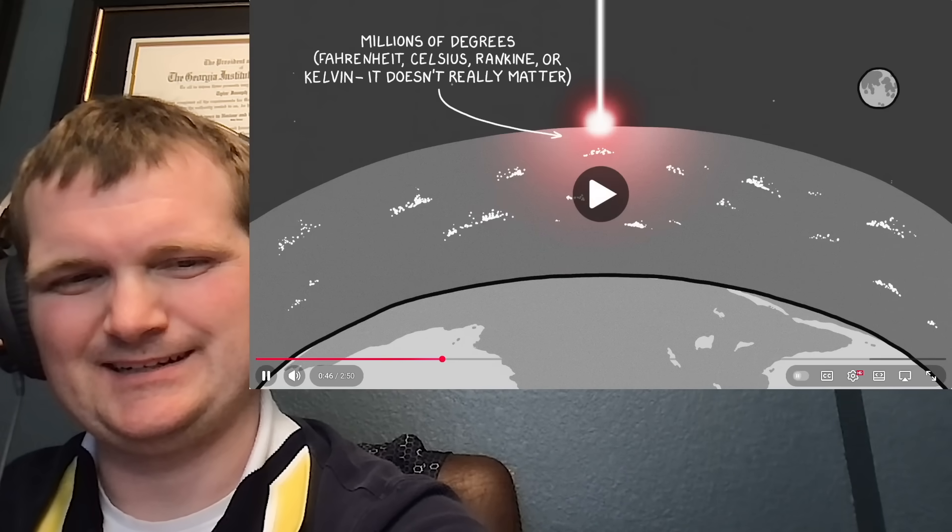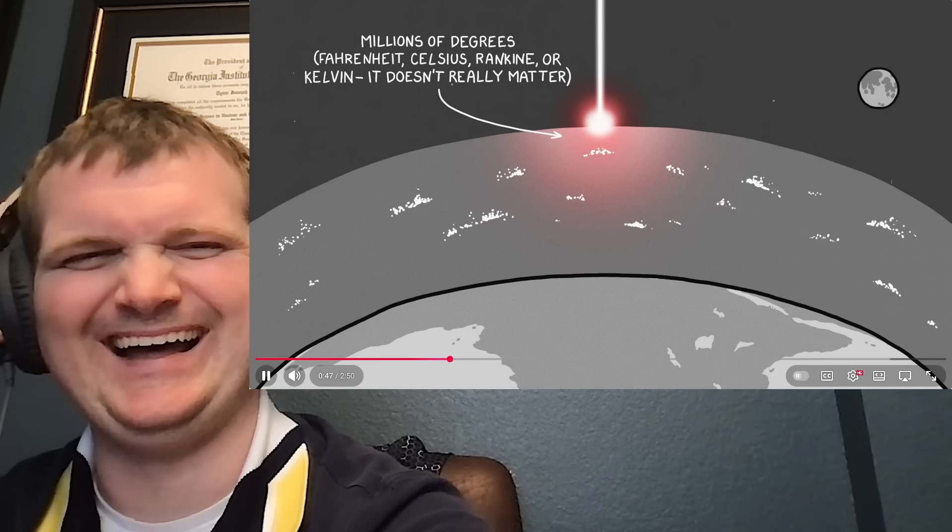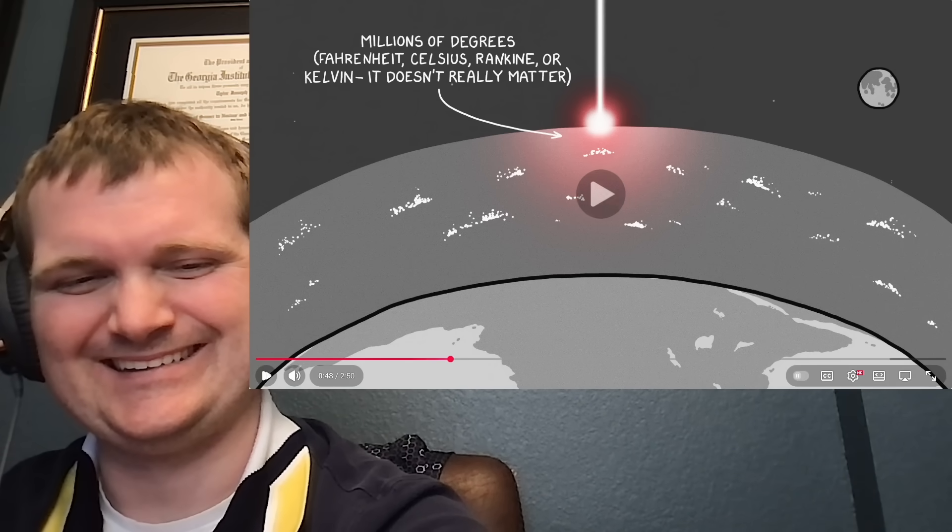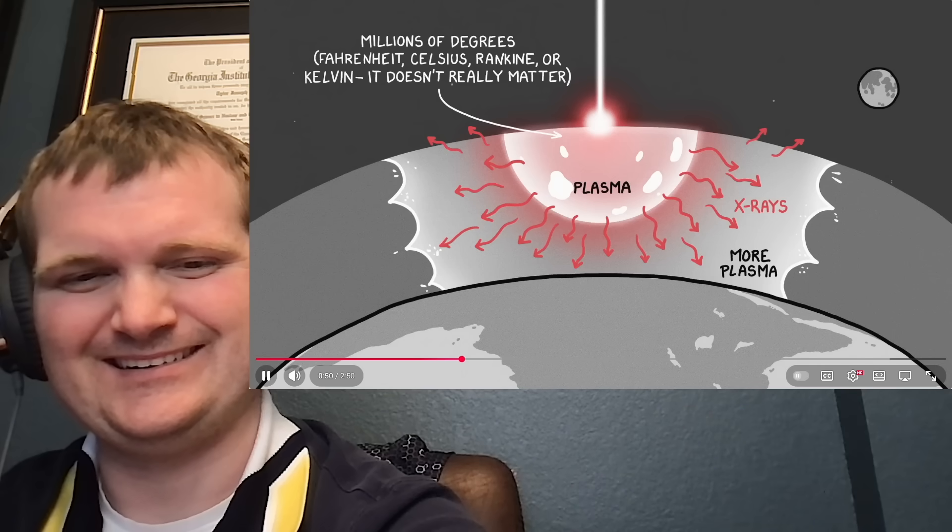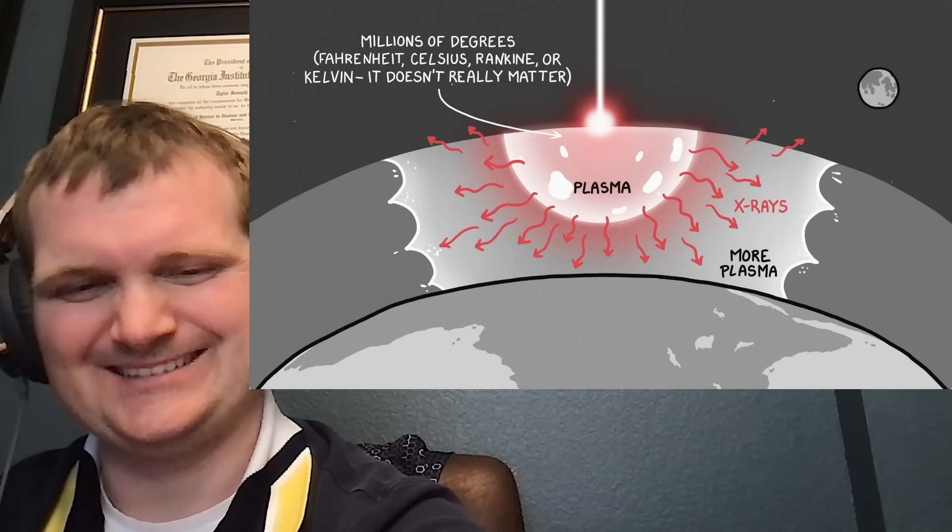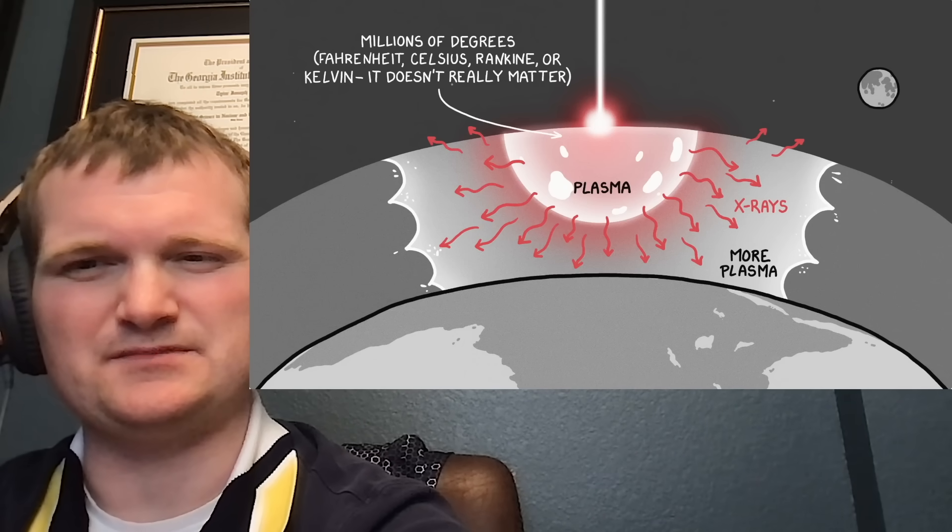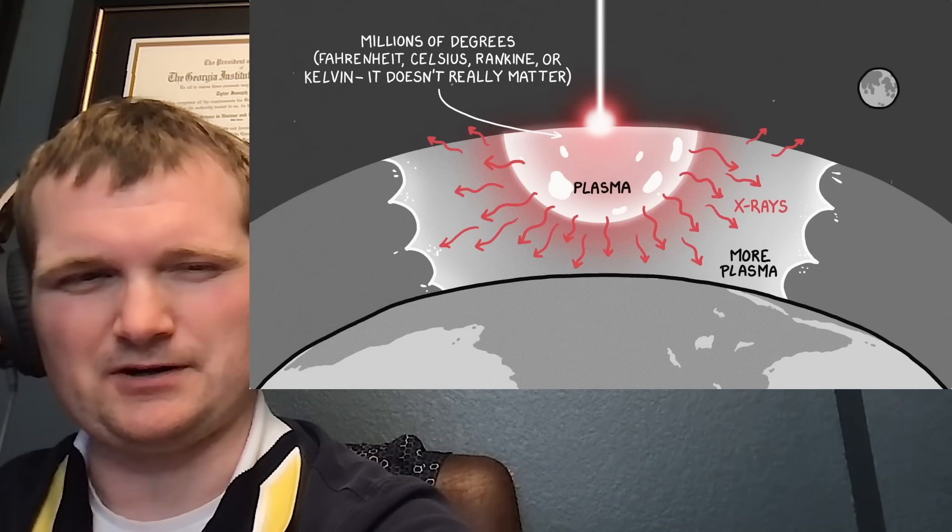When the beam of light hit the atmosphere, it would heat the air to millions of degrees in a fraction of a second, turning it into a plasma, which would start dumping its heat as a flood of x-rays. Those x-rays would heat up the air around them, which would turn to plasma itself. At these temperatures, molecules break into atoms, atoms lose electrons, and the air becomes a sea of ionized particles.